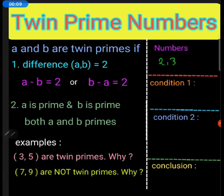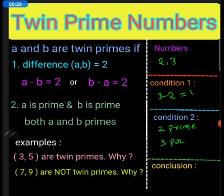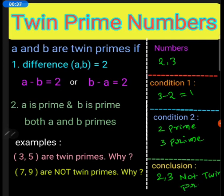Consider 2 and 3. The difference between these two numbers is 1, so the first condition is not satisfied. Two is prime and three is also a prime number, but the conclusion is 2 and 3 are not twin primes.